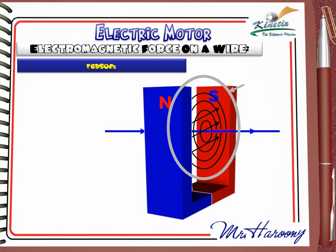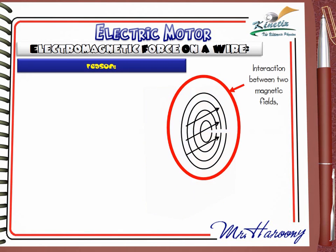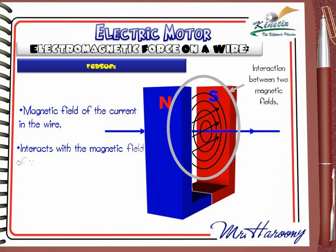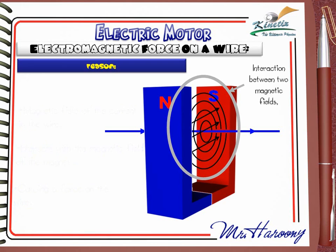In this region there is an overlap between two magnetic fields, just as if there are two magnets. This overlap causes an interaction between the two magnetic fields, which causes a force on the wire. So we can explain the force as follows: the magnetic field of the current in the wire interacts with the magnetic field of the magnet, causing force on the wire.